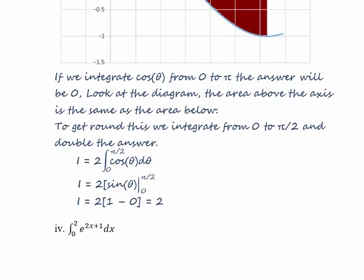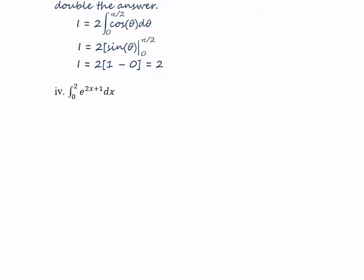Part four. The integral of e to the two x plus one will be e to the two x plus one over two. I'll take a half outside the bracket and put the values in. When x is two, the exponent is five; when x is zero, the exponent is one. So we get half of e to the five minus e. Putting the values into a calculator gives approximately seventy-two point eight five.